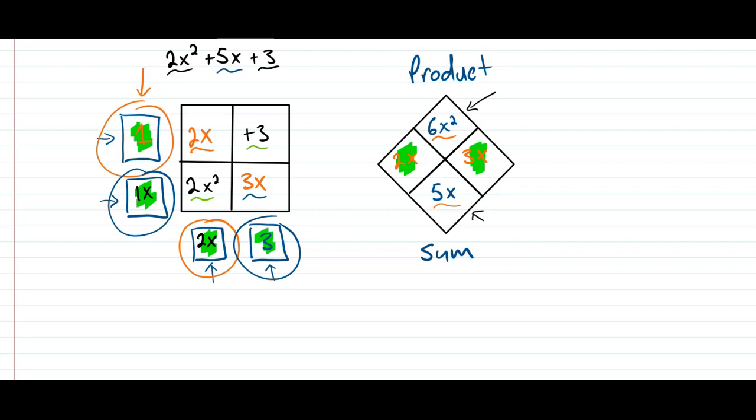So now that I have the outside numbers for this area model, I can now write the factors, which are 2x plus 3, which I'm getting from right here, times 1x plus 1, which I'm getting from right here. So these are the factors of this quadratic expression, 2x squared plus 5x plus 3. And this is how you use an area model with a diamond problem.